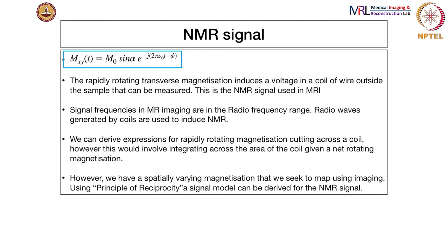The Mxy component is rotating rapidly in the plane. Since there is a rotating magnetization, if we place a coil of wire outside the sample, this rotating magnetization can be measured. This is exactly the origin of the NMR signal. The signal frequencies in NMR — this nu-0 — turns out to be in the radio frequency range, megahertz. The radio waves are generated by the coils, and there is one more step where we actually need to generate a radio wave in order to measure another radio wave frequency.